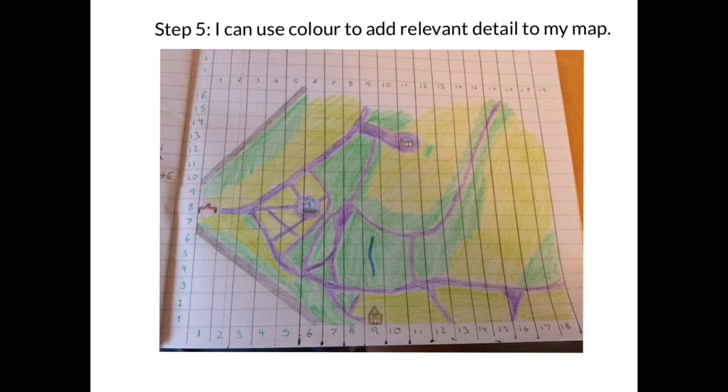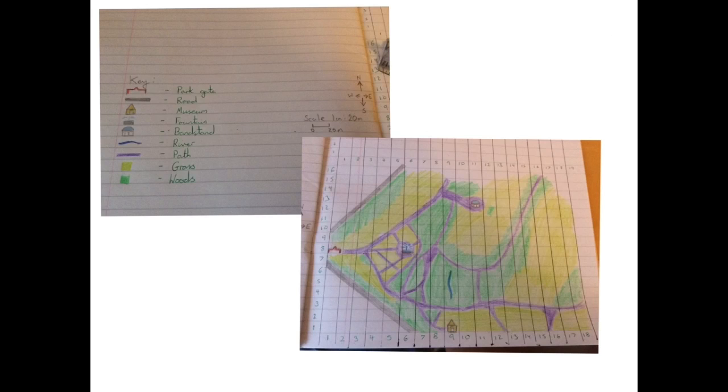But we also remember this is where photos are a big, big help. And lastly, with step five, I can use colour to add relevant detail to my map. So now that we've finished all the plotting out of the landmarks and the correct measurements, we can now go back through and use colour to represent different objects. So as you notice that I've coloured in the roads in grey. We've got the paths here in the park, here in purple, so you can see exactly where all the paths are. We've made sure to colour in the river. And you notice that we've used two different shades of green here in the park. What do you think those different shades of green might actually stand for?